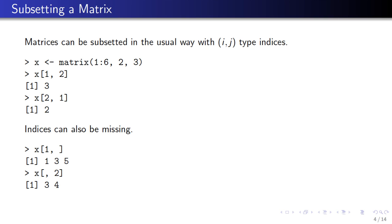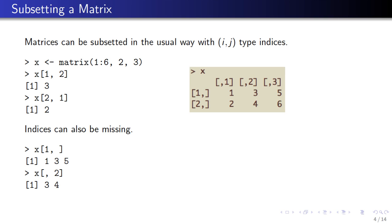Matrices can be subsetted in the way you would expect. The first index is the row index, and the second index is the column index, and we can use numbers. So for example, if x is a two-by-three matrix with the numbers 1 through 6, x[1, 2] gives me the first row, second column, which is the number 3. And x[2, 1] — second row, first column — gives me the number 2.